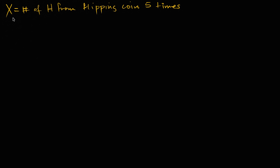This random variable could take on the value X equals zero, one, two, three, four, or five. What I want to do is figure out the probability that this random variable takes on each of those values. To do that, first let's think about how many possible outcomes there are from flipping a fair coin five times.